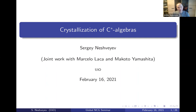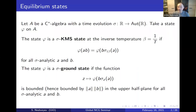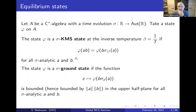I will talk about joint work in progress with Marcel Boca and Makoto. Let me go through some basic definitions and then explain what this is all about. We'll deal with equilibrium states. Recall what it means: if we have a C*-algebra with a one-parameter group of automorphisms and a state on A, then we have KMS states.